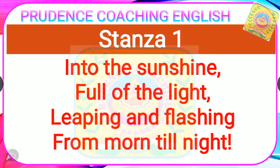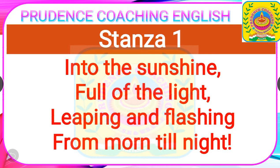Now we are going to discuss the line by line explanation of the poem. Here is the first stanza: 'Into the sunshine, full of the light, leaping and flashing, from morning till night.' The poet describes the appearance of the fountain — how the water keeps jumping up from the spring in the sunlight from morning till the end of the day. It seems to shine even brighter in the light.